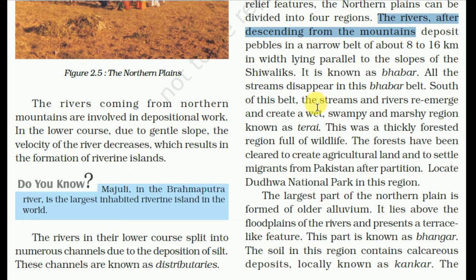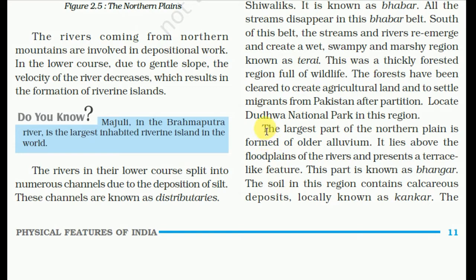South of the Bhabar belt, the streams and rivers re-emerge and create a wet, swampy, marshy region known as the Tarai. This was a thick forested region full of wildlife. The forests have been cleared to create agricultural land and to settle migrants from Pakistan after partition. The Dudhwa National Park is located in this region — you can find it in your atlas.